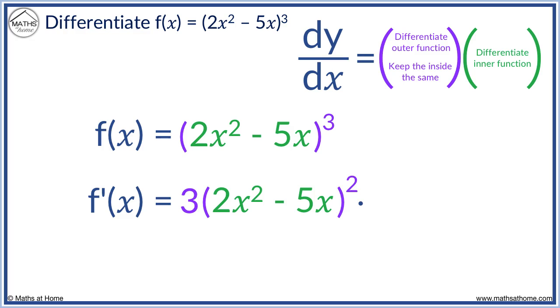We differentiate 2x² - 5x. 2x² differentiates to 4x and 5x differentiates to 5. 2x² - 5x differentiates to 4x - 5.